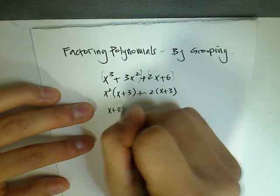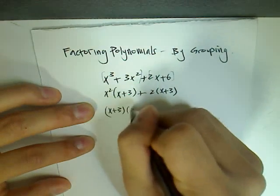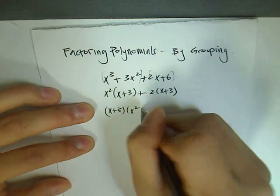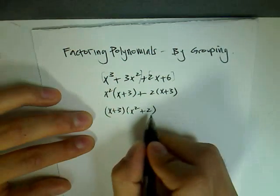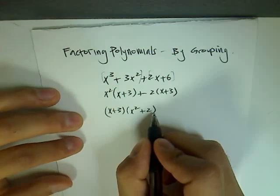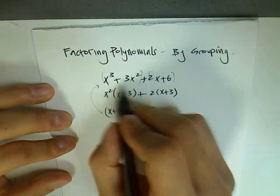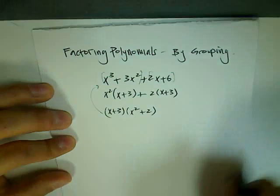So from here, we can take out an x plus 3, and from the first term, we're left with an x squared, and the second term, we're left with a 2. So this would be the completed factored form of the polynomial x cubed plus 3x squared plus 2x plus 6.